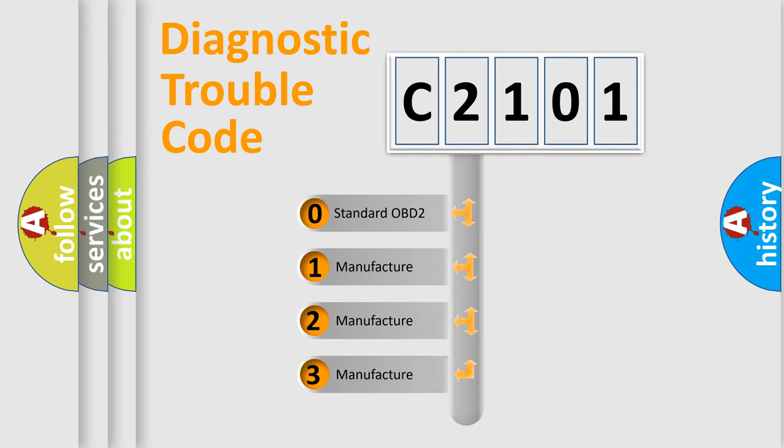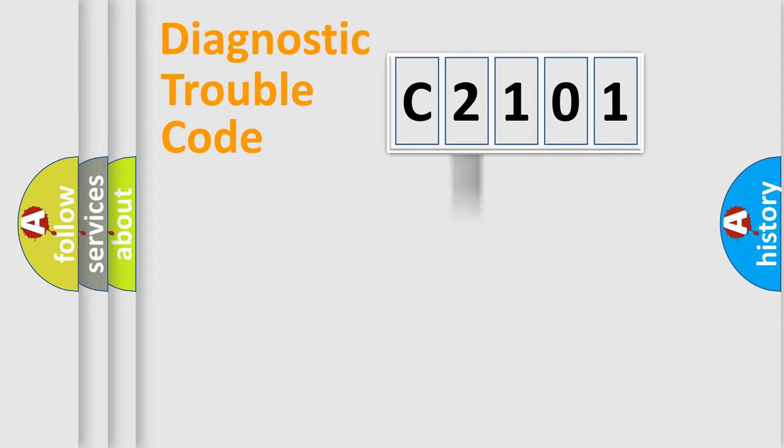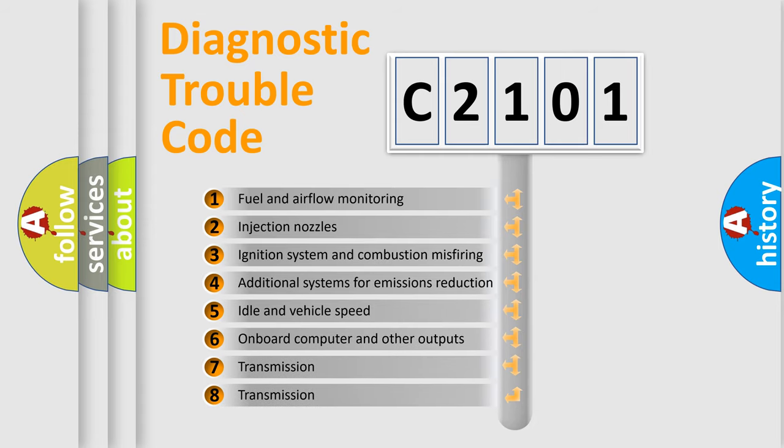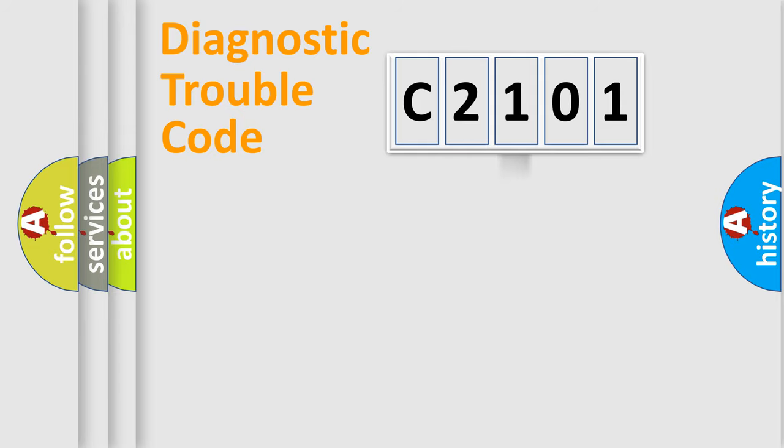If the second character is expressed as zero, it is a standardized error. In the case of numbers 1, 2, or 3, it is a car-specific error. The third character specifies a subset of errors. The distribution shown is valid only for the standardized DTC code.